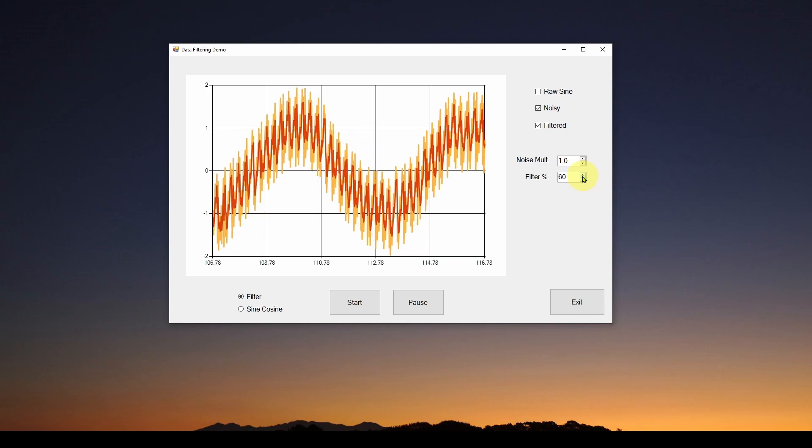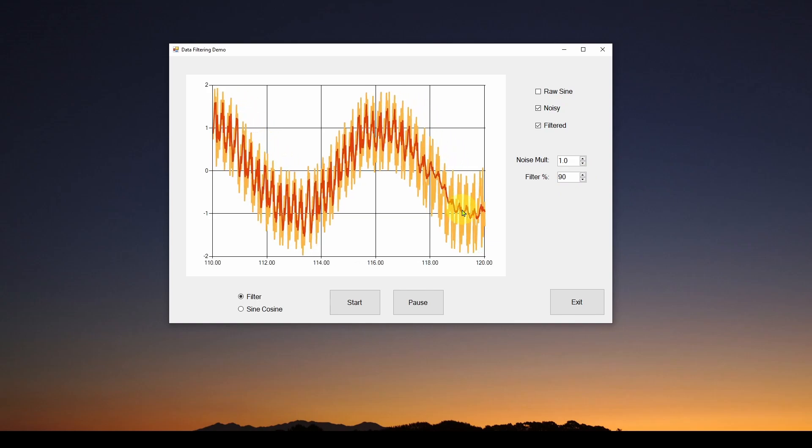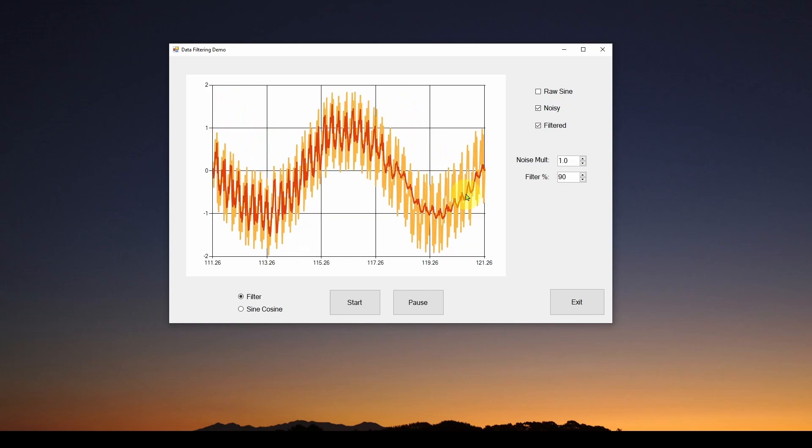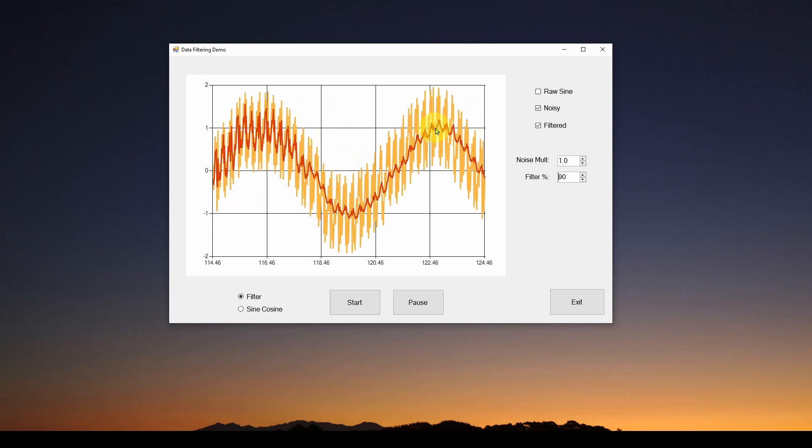go up to 60%, 70%, 80%, 90%. And you can see we're really starting to filter out some of this noise because we are kind of applying a low-pass filter to this. Again, it's not totally the same as our clean sine wave.